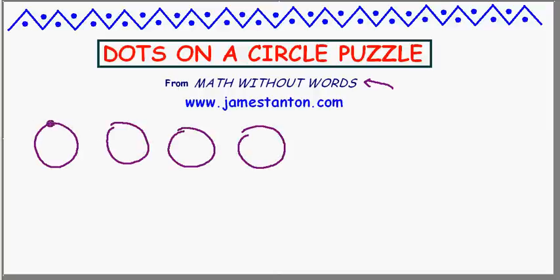On the first circle I'll place one dot. On the second circle I'll place two dots. The next one I'll place three dots, and then I'll place four dots and more circles, one dot each time. Okay, great. What I'm going to do now is connect each pair of dots within each picture with a line.